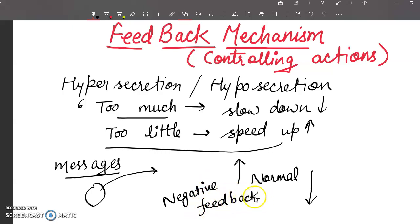Most feedback mechanisms in our body are of negative type. For example, TSH hormone, thyroid stimulating hormone.